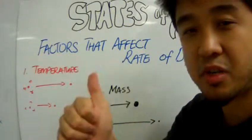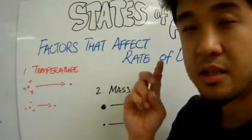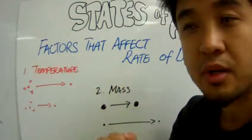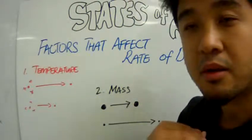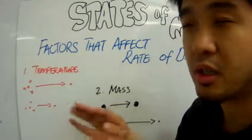First is the temperature and how that affects the rate of diffusion. And then secondly, we are going to talk about how the mass of the particle that is being diffused will go in that liquid or gas medium.